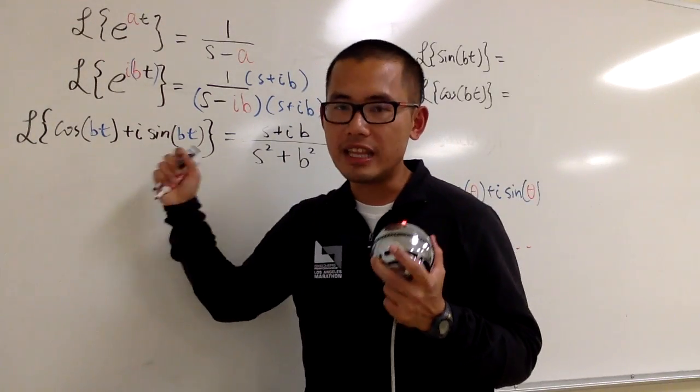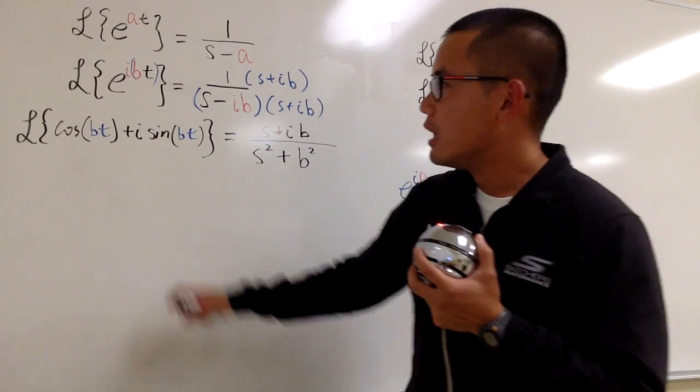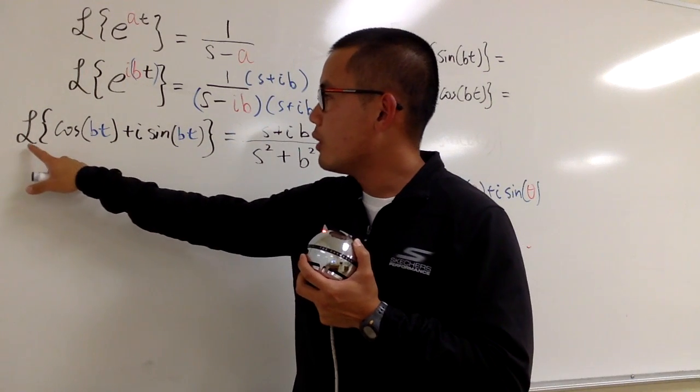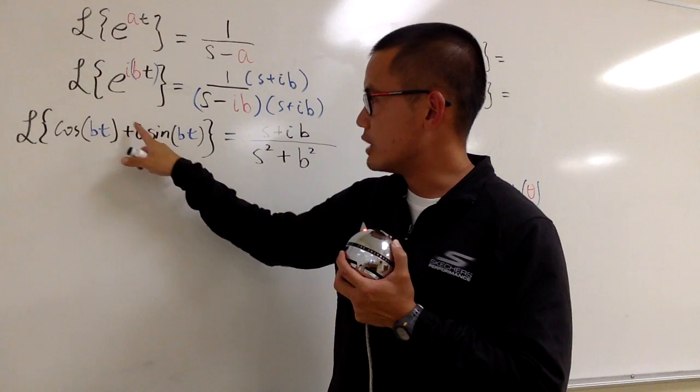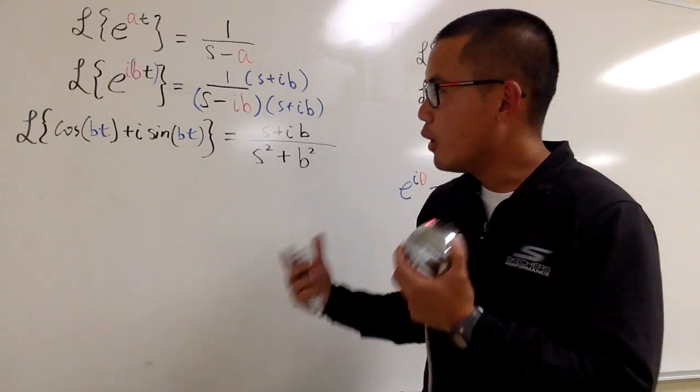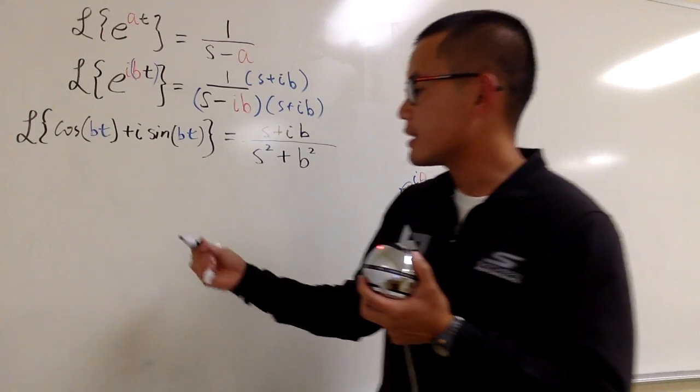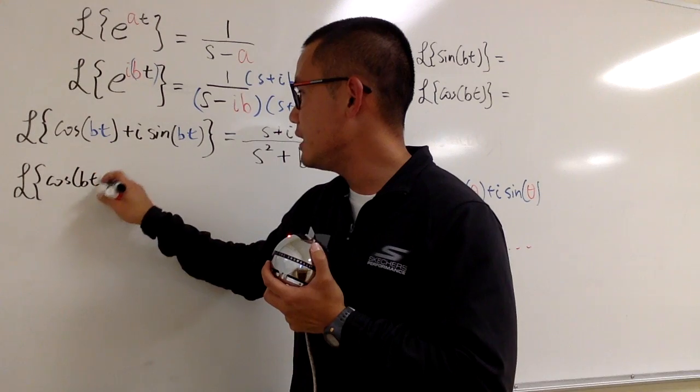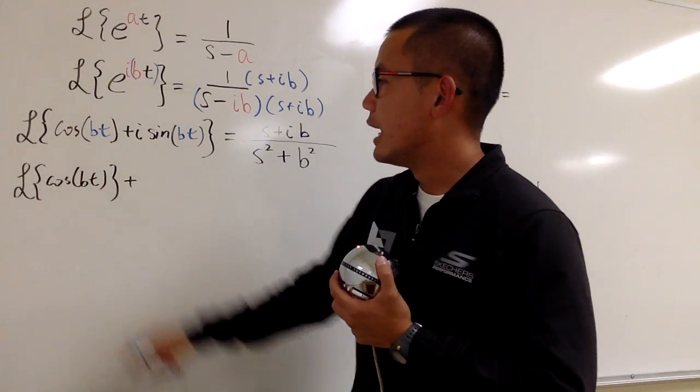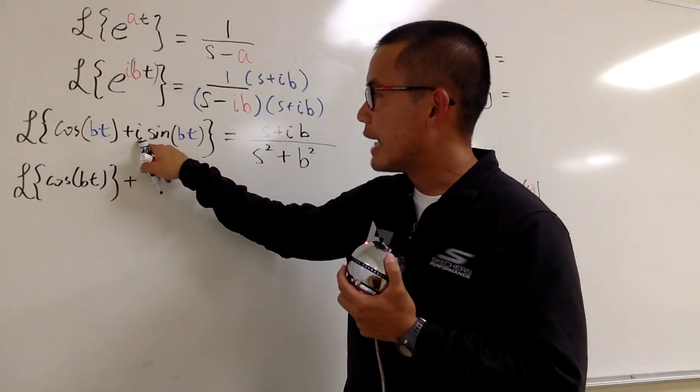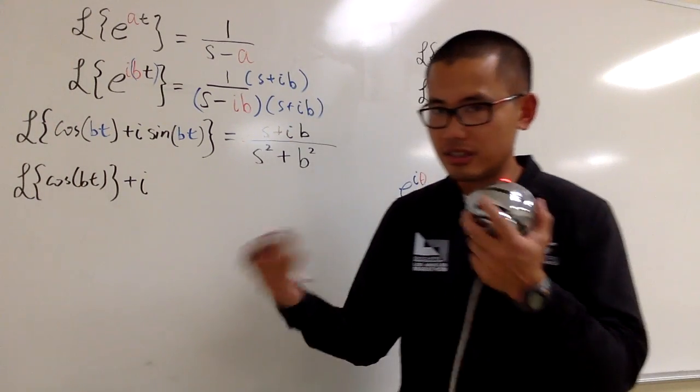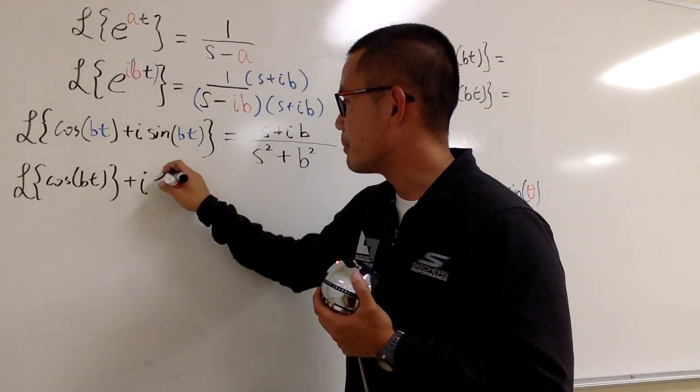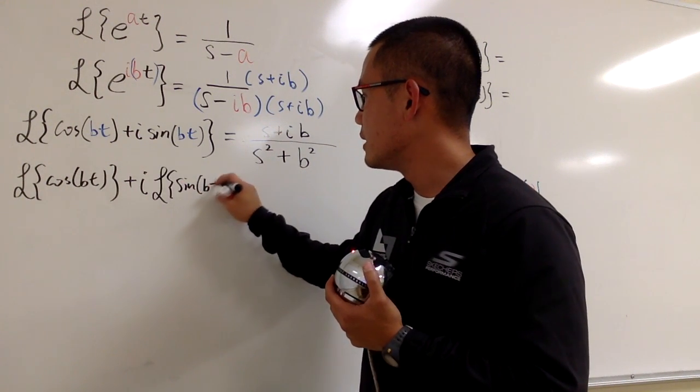Now, let me take care of the left-hand side. Here is a technical detail. The Laplace transformation is a linear operation. What that means is that I can break this apart. We can do the Laplace of cosine bt, and then Laplace transform of i sine bt. Because i is a constant, I can factor that out. Because Laplace has linearity, this is the same as Laplace of cosine bt first, and then we add it with Laplace of i sine bt, but I can factor the i, so I'll put the i outside. We put the i on the outside, and then we have the Laplace transform of sine bt.